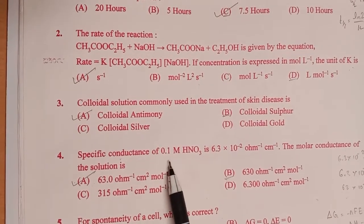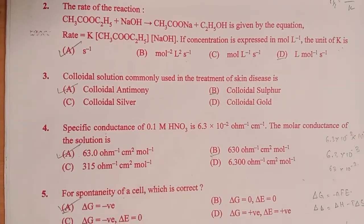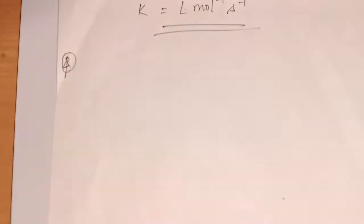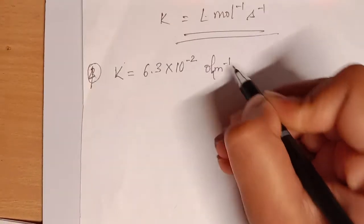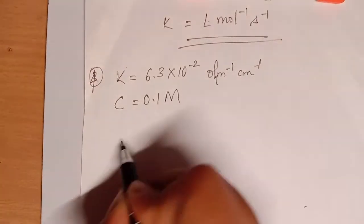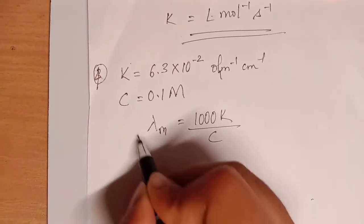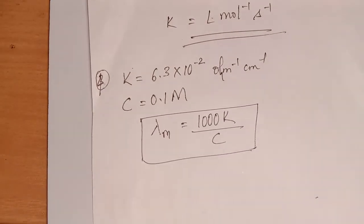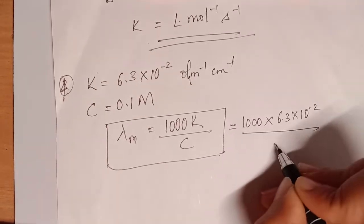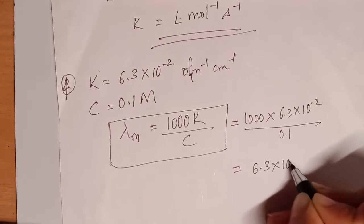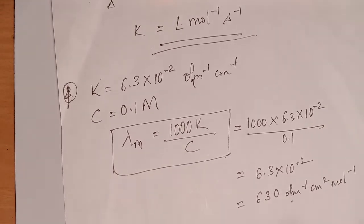Fourth question: specific conductance of 0.1 M HNO₃ is 6.3 × 10⁻² ohm inverse centimeter inverse. The molar conductance of the solution is? K equals 6.3 × 10⁻² ohm inverse centimeter inverse, and concentration C is 0.1 M. The molar conductance formula is λ_m equals 1000 K divided by concentration. Substituting: 1000 × 6.3 × 10⁻² divided by 0.1 gives 630 ohm inverse centimeter squared mole inverse. That is option B.